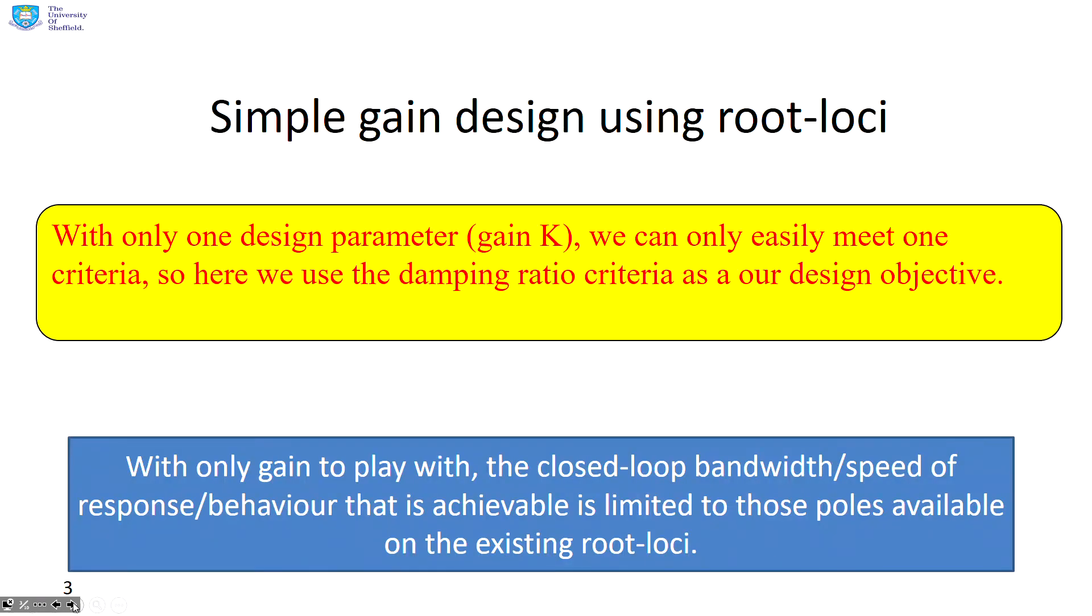We're going to focus first on simple gain design using root loci. Now, if we've got only one design parameter, the gain K, we can only easily meet one criteria. So for this video, we're going to focus on a damping ratio criteria. What you need to be aware of, if you can only change one thing, then the closed loop bandwidth and speed of response and behavior that is achievable is limited only to those poles already on the root loci. So you can't change the root loci itself.